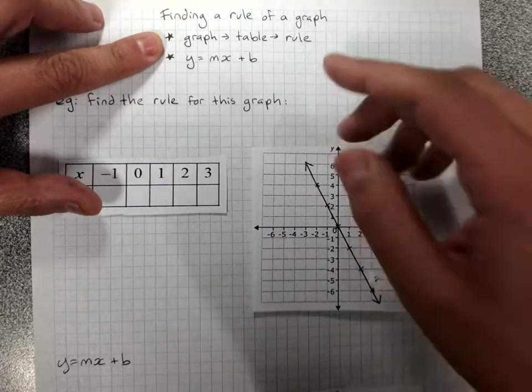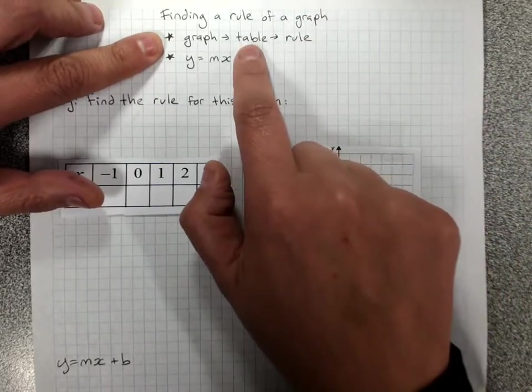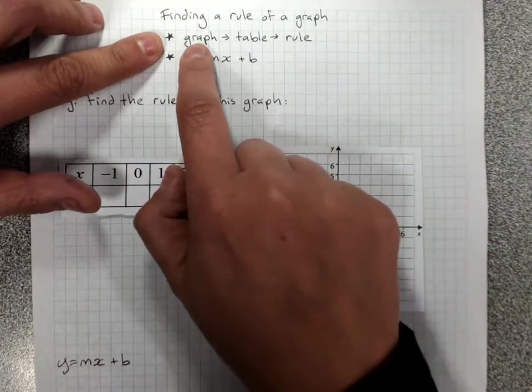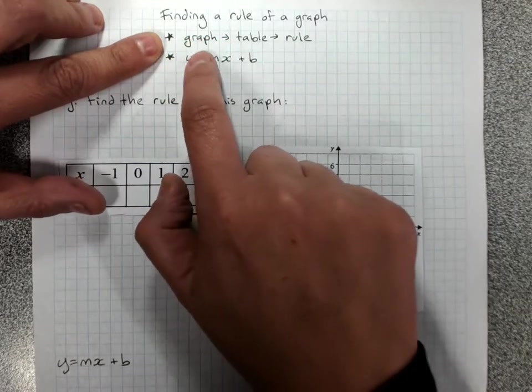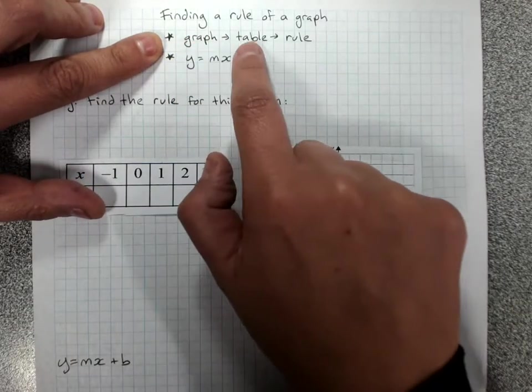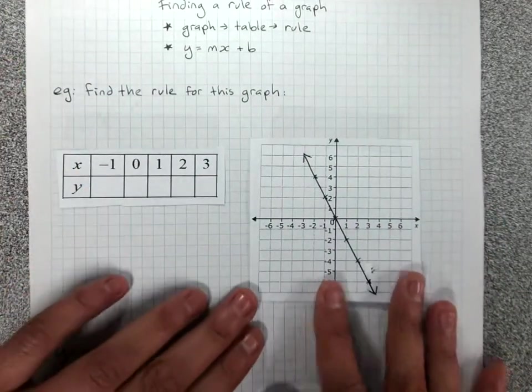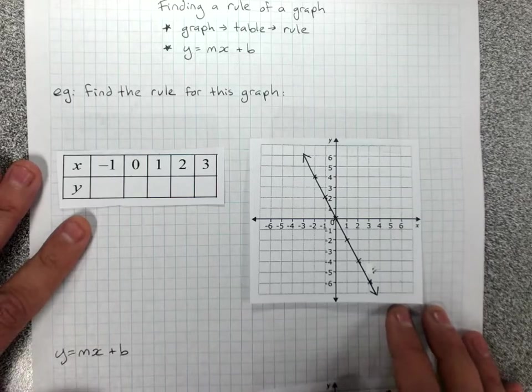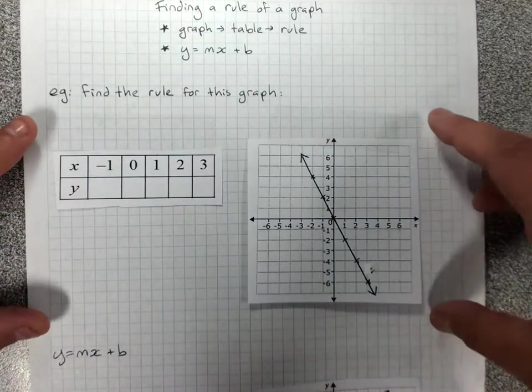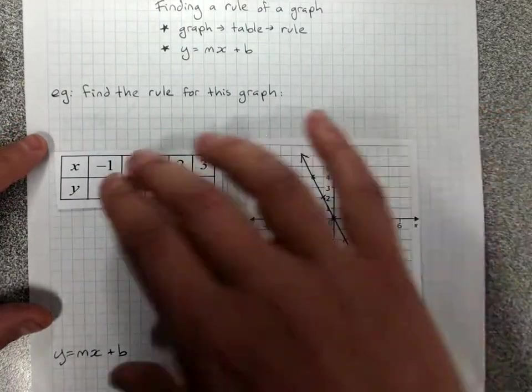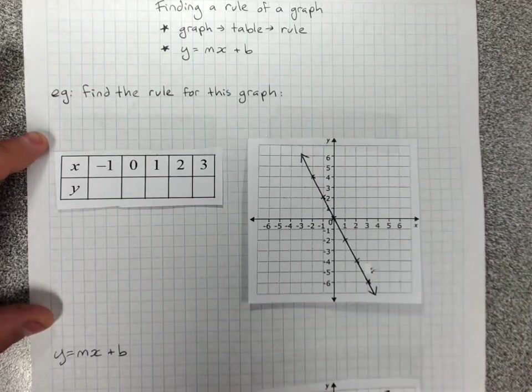So when we are given a rule, we make a table of values and we graph it. What that means is we can reverse that from a graph, we can make a table of values and find the rule. Here we've got a graph that hasn't been labeled with its rule and a blank table of values. This is one of the ways that we first learn how to find a rule.